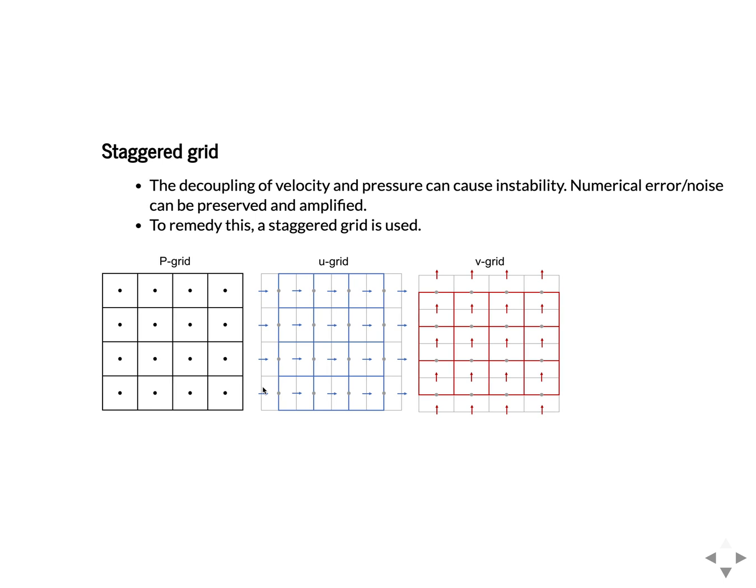This decoupling of velocity and pressure can cause instability. Numerical noise, which is always present in a solution, can be preserved and amplified, causing numerical problems. To remedy this we use a so-called staggered grid.